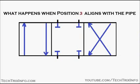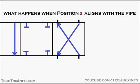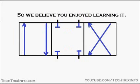When position three aligns with the pipe, the flow is reversed. That's what position three does — it reverses the flow direction. So that's how a three-position four-port valve works and how its schematic representation is done.